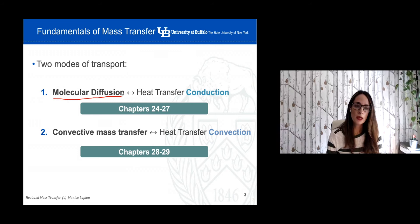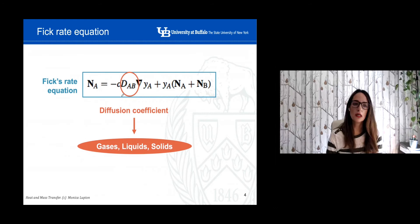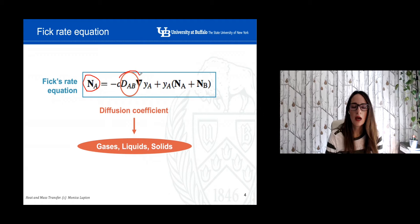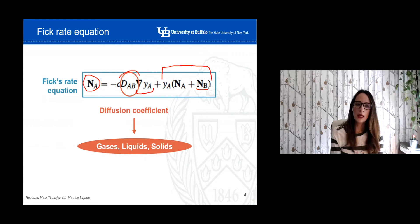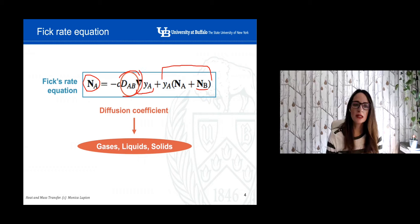Today we're going to focus on the determination of the diffusion coefficient. If you remember this equation from the previous video, we defined Fick's rate equation. The molar flux of element A is a function of the diffusion coefficient and the gradient of the concentration of element A, plus another term — the bulk motion — where we also consider the presence of other elements. Every time we want to calculate the molar flux related to diffusion, there is a diffusion coefficient involved.